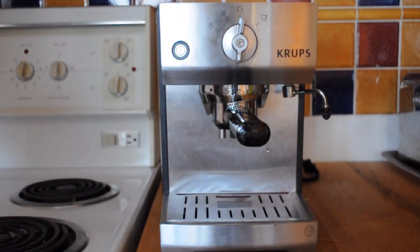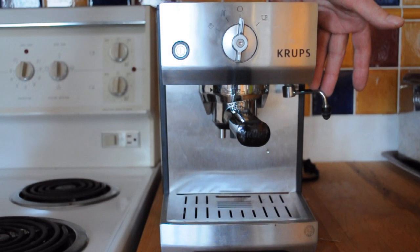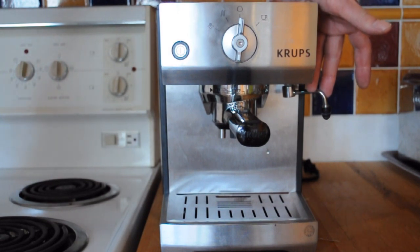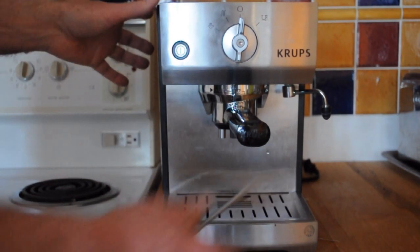The second problem that a lot of people have with the 5240 and apparently other similar models is that the steamer wand over here is very fragile. And the damn thing breaks off. Let's have a look.